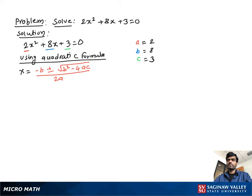Now, using quadratic formula, x equal to negative b plus minus square root b² minus 4ac over 2a. Now, substituting the value of a, b, c in this equation, we get x equal to negative 8 plus minus square root 8² minus 4 times 2 times 3 over 2 times 2.